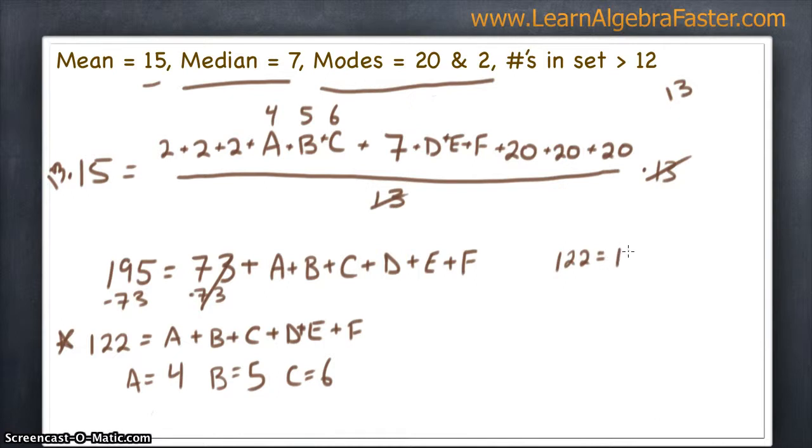I'll subtract the 15 from both sides. 122 minus 15 is 107. So, can we come up with a combination of D, and E, and F that give us 107? I think we probably can.